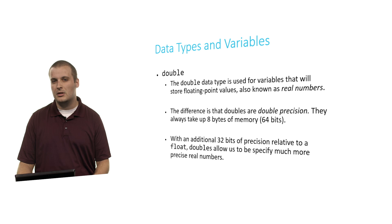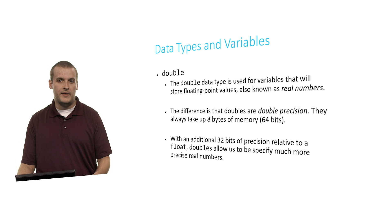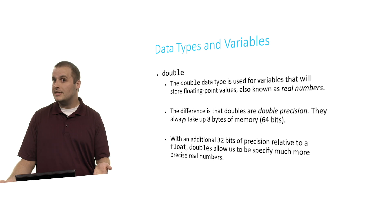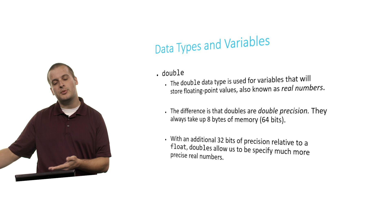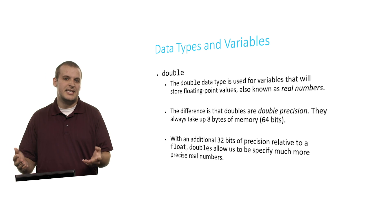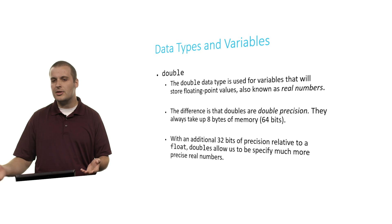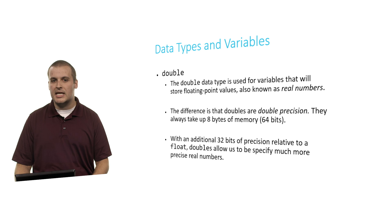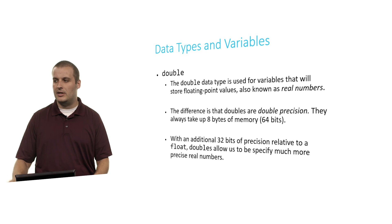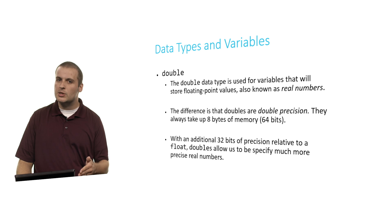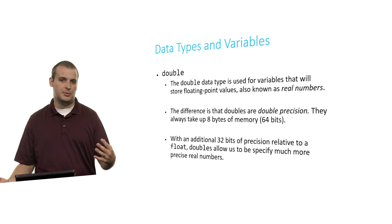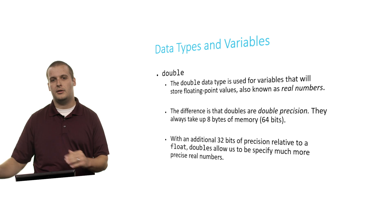Fortunately, there's another data type called double, which somewhat deals with this problem. Doubles, like floats, are also used to store real numbers, but doubles are double precision — they can fit 64 bits of data, or eight bytes. That means we can be a lot more precise with the decimal point; instead of pi to seven places with a float, maybe we can have it to 30 places. If precision is important, you probably want to use a double over a float, though for most work in CS50 a float should suffice.